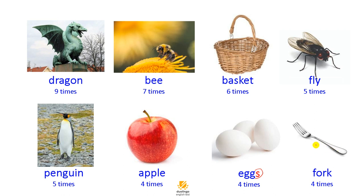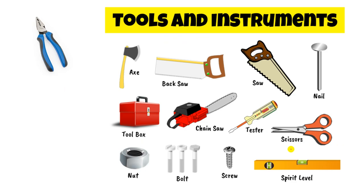Fork and spoon. One of the most essential words we have to know is pliers. As you see here, pliers with four times repetition in the category of tools and instruments.